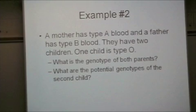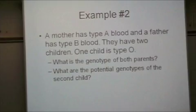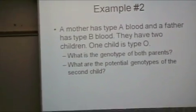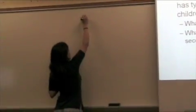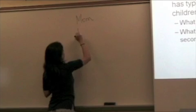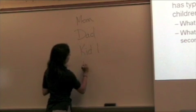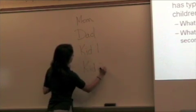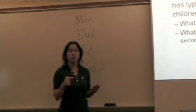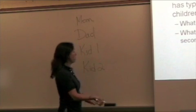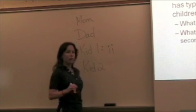I'm going to set this one up differently because I know some information but there's still some that I don't know. I'm going to start by listing all of the individuals involved: mom, dad, kid one, and kid two. I know that one of the kids is type O and we said that O is homozygous recessive. So I'm going to give that kid the two little i's.